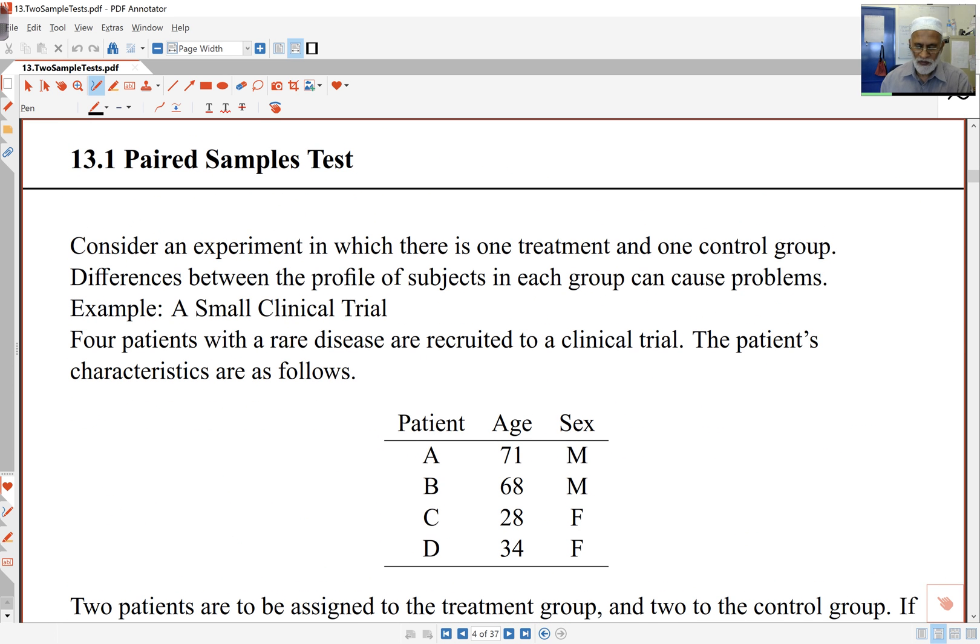First of all, let's look at this situation where I've got an experiment in which there's one treatment and one control group. So I'm here after the differences between the treatment and the control. In other words, I want to see if the treatment makes a difference. But if there are differences between the subjects in each of the groups, then I can't be sure whether the differences I am seeing are due to the treatment or due to just differences between subjects.